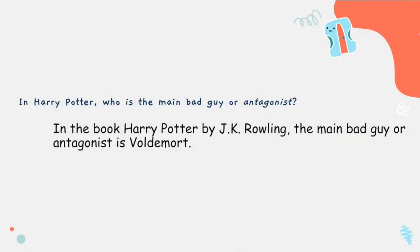Let's take a look at another example from a popular book that many of you may have read. This question is: in Harry Potter, who is the main bad guy or antagonist? If we were responding to this question with a PEE paragraph, this sentence right below the question would be the first sentence or the point to that PEE paragraph.